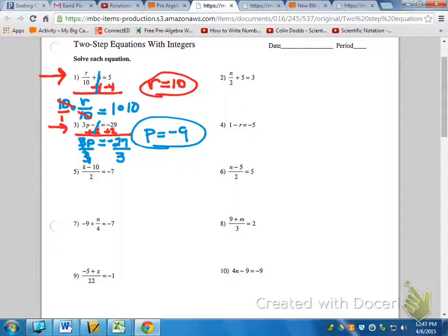you have to do a multiplication first. So on K minus 10 over 2 equals negative 7, you've got to multiply both sides by the 2. Whatever number is in that denominator, that's what you've got to multiply by.